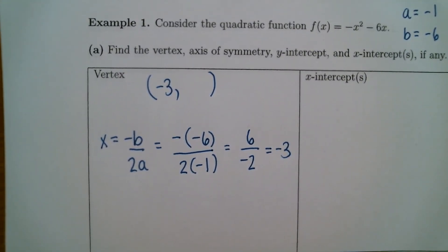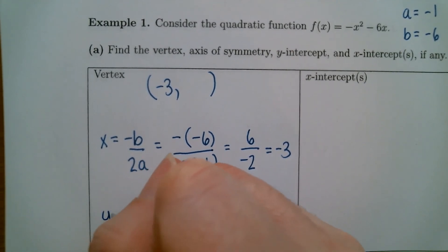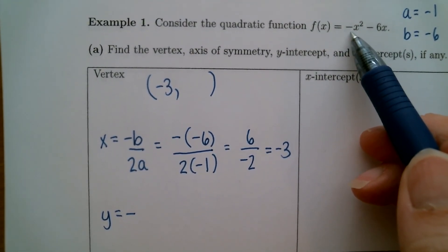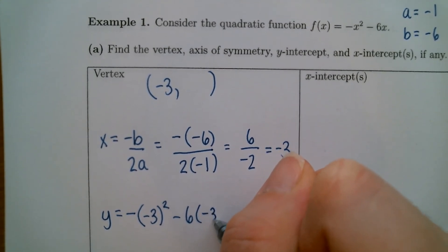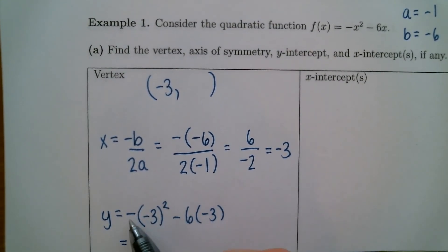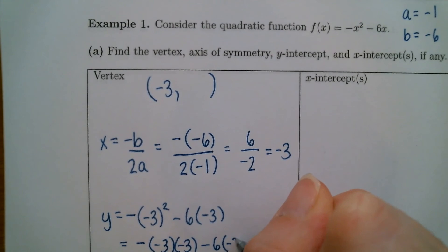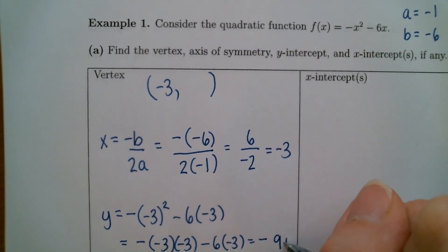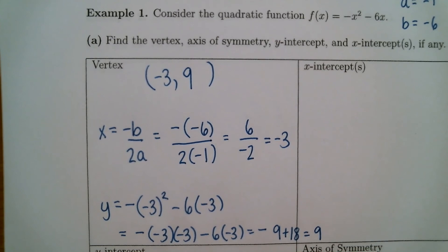To get the y-coordinate, take the x value and plug it back into the original function. So y equals negative — be careful, that negative lives out front and is not squared — then x is negative 3, squared, minus 6 times negative 3. The negative is outside the parentheses. Negative 3 squared is 9, so this becomes negative 9 plus 18, which gives us positive 9. That is the y-coordinate, so the vertex is at negative 3, 9.